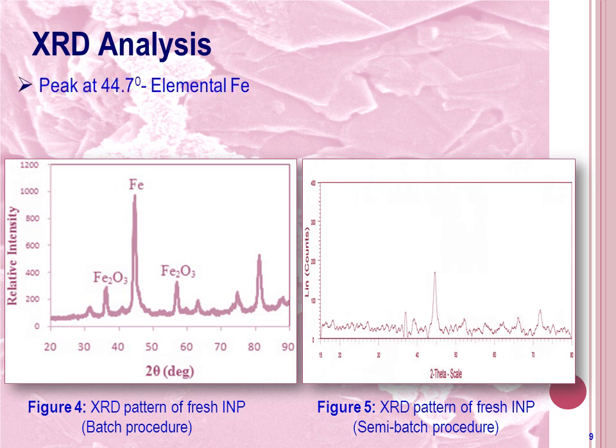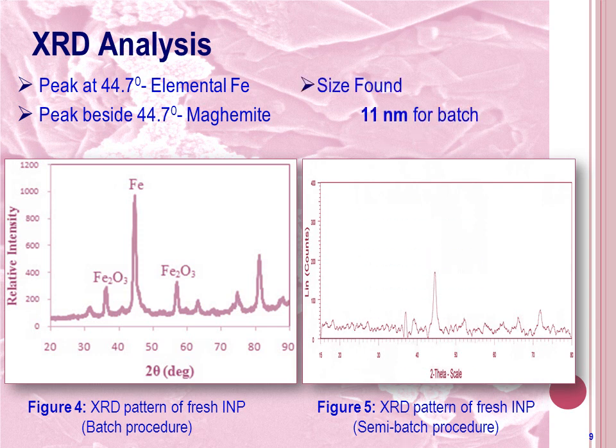In both procedures, the measured peak was found at 44.7 degrees two-theta, which indicates the presence of elemental iron in the particle sample. The peaks beside 44.7 degrees indicate the presence of oxidized iron, which was mainly maghemite. By using the Scherrer equation from the value of full width at half maxima, the size of INP produced by the batch procedure was found to be 11 nm, while this size was 6.97 nm for the semi-batch procedure.